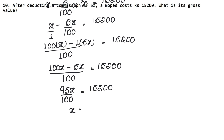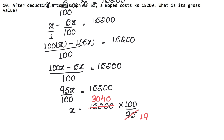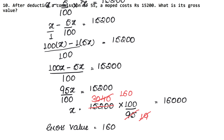So X = (15,200 × 100) / 95. Cancelling: 15,200 ÷ 5 = 3,040 and 95 ÷ 5 = 19; then 3,040 ÷ 19 = 160; so 160 × 100 = 16,000. X was assumed to be the gross value, so the gross value is Rs. 16,000 is the answer. Let us do the next question now.